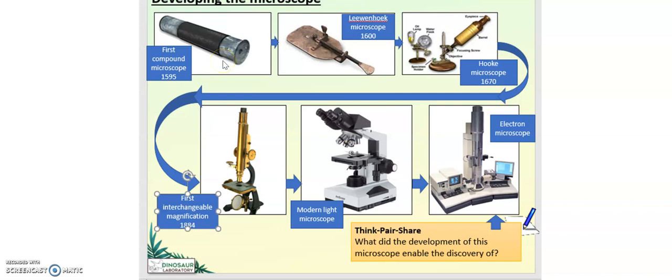Followed by 1625, Galileo Galilei was the one credited of inventing the first compound microscope. Hans and Zacharias Jansen produced the first compound microscope, but the invention was credited to Galileo Galilei.